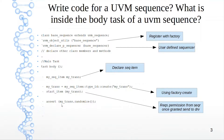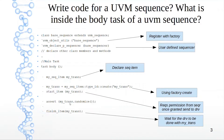Since start_item is a blocking call, it can take a long time. If you had already randomized my_trans prior to this, you would not have the most up-to-date testbench environment variable updates. So performing randomization at this point makes it just-in-time, and then you can immediately call finish_item. Finish_item waits until the driver is done with my_trans and signals the sequence, which unblocks this call. Then you have your end task and end class.